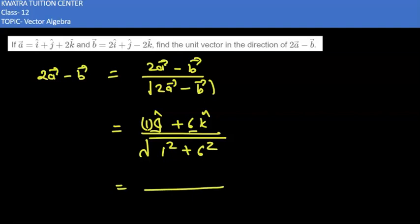So now, we have j hat plus 6k hat divided by square root of 1 plus 36, which equals 37.